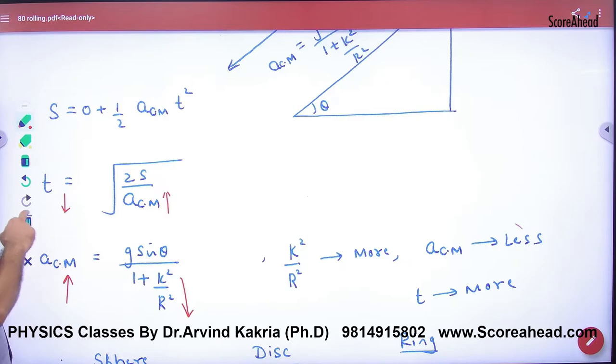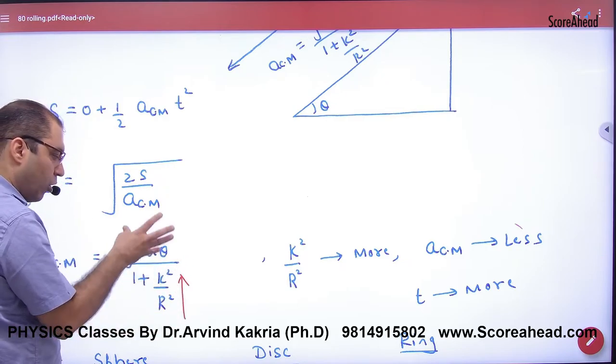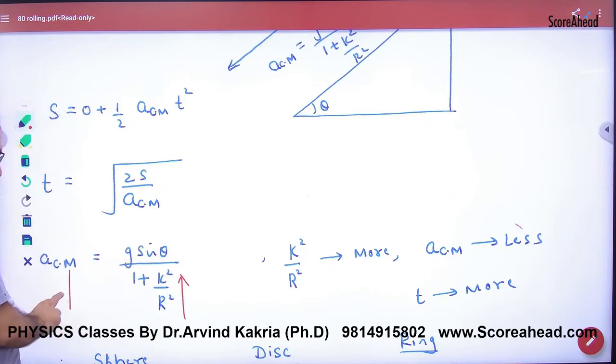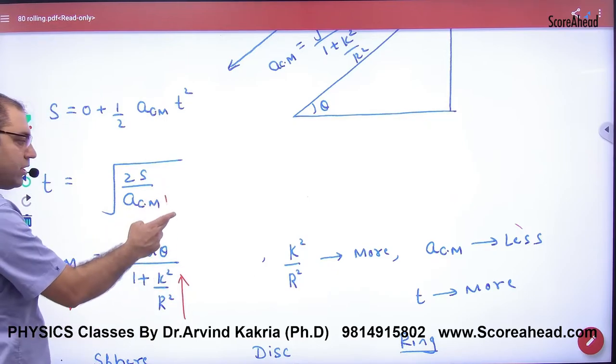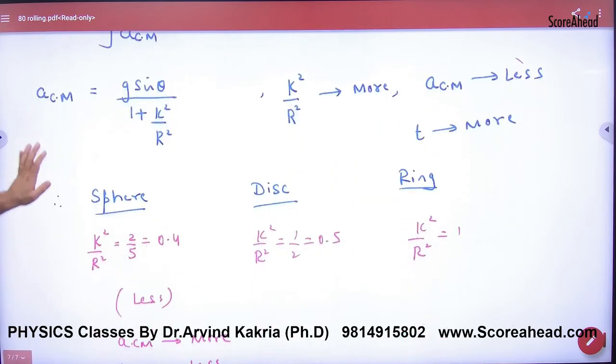Or let it go. Which will be more k² by r²? The denominator will be more, the acceleration will be less. Which will be less? The time will be less. Simple equation. Do a job. First do a job. You have written k² by r².